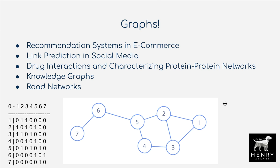We'll start with a quick overview of what graphs are and how they're represented as discrete data structures. Here is a graph represented as an adjacency matrix, where we have ones to signal the edges and zeros to signal that there is not an edge. For example, there's a zero in the place of one to seven, meaning that node one is not connected to node seven.